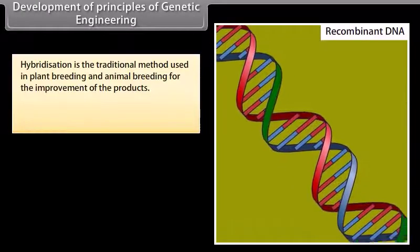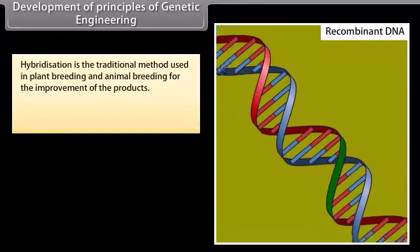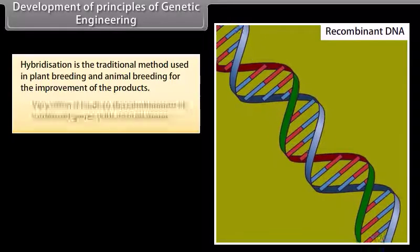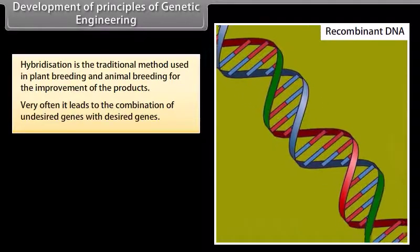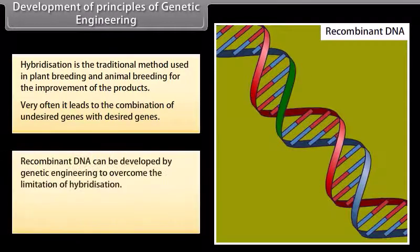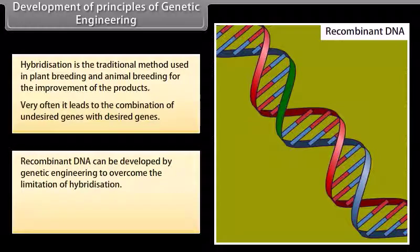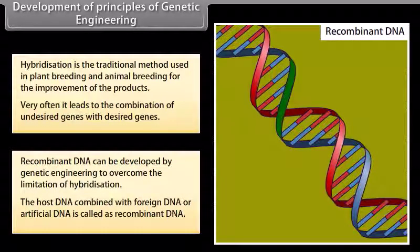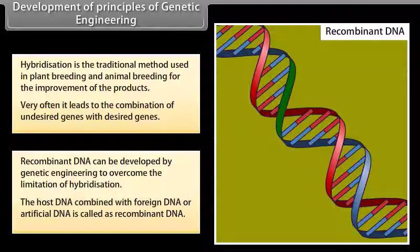Development of principles of genetic engineering. Hybridization is the traditional method used in plant breeding and animal breeding for the improvement of the products. Very often it leads to the combination of undesired genes with desired genes. Recombinant DNA can be developed by genetic engineering to overcome the limitation of hybridization. The host DNA combined with foreign DNA or artificial DNA is called as recombinant DNA.